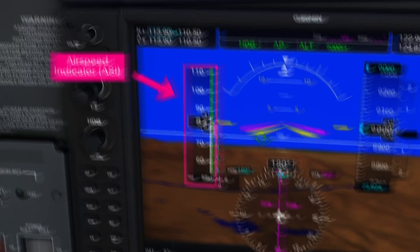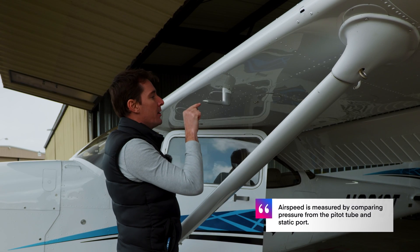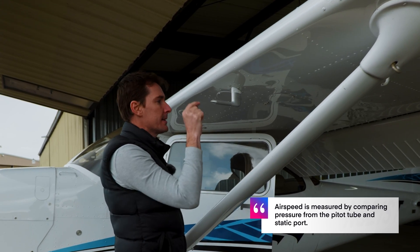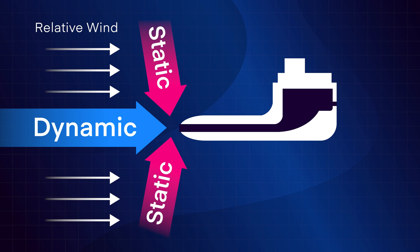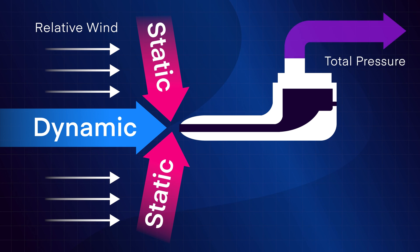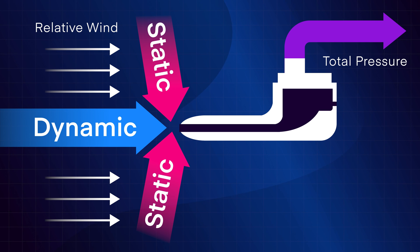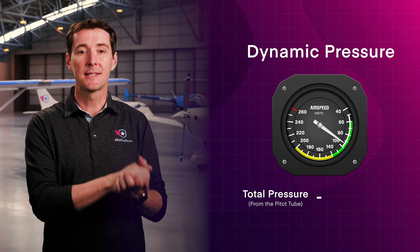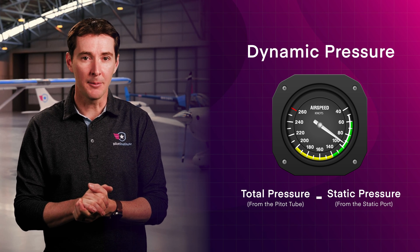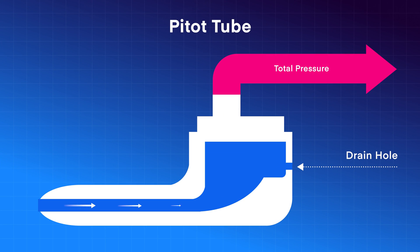As the name implies, it measures airspeed. It does this by reading dynamic pressure, and it uses a neat little trick to do so. It compares the pressure from the pitot tube and the static port. The pitot tube measures both the dynamic pressure in the form of ram air, and also the static pressure. The total pressure is made of the dynamic pressure plus the static pressure. Because the pitot tube provides total pressure and the static port provides static pressure, the airspeed indicator can subtract static from total pressure to get dynamic pressure. Notice the drain hole in the back — it prevents things like water or debris from getting stuck in the pitot tube. Remember this; it will come up later.